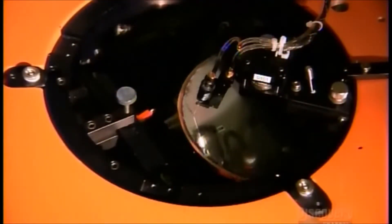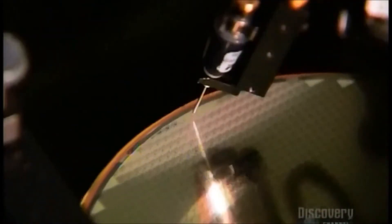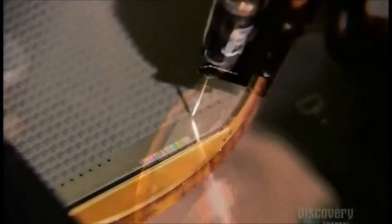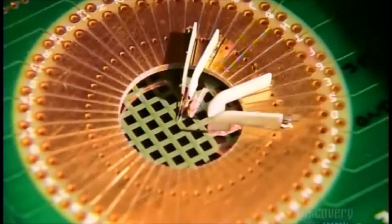Each finished CCD undergoes a battery of automated tests to ensure that all the circuits are functional. This machine marks faulty circuits with ink. Just one bad circuit is enough to discard the entire CCD.